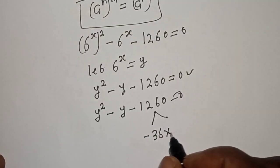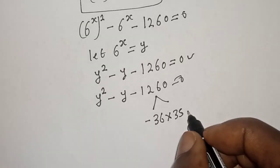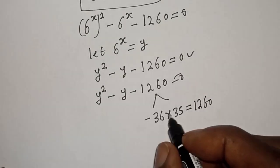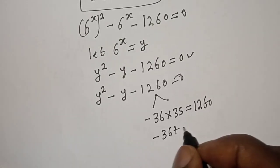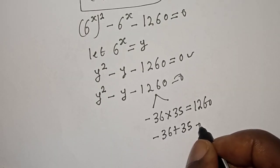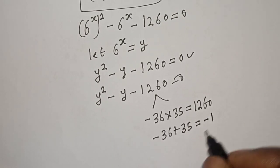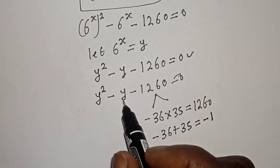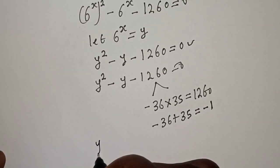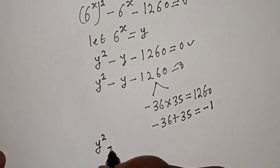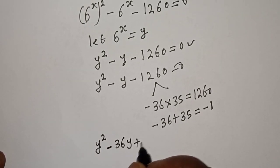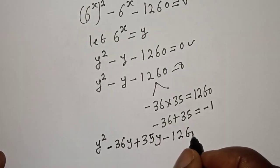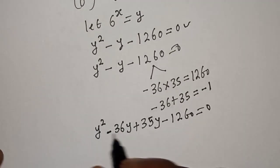We need two numbers: minus 36 multiplied by 35 equals negative 1260, and minus 36 plus 35 equals minus 1. So the product must equal negative 1260 and the sum must equal negative 1. We have y squared minus 36y plus 35y minus 1260 is equal to zero.